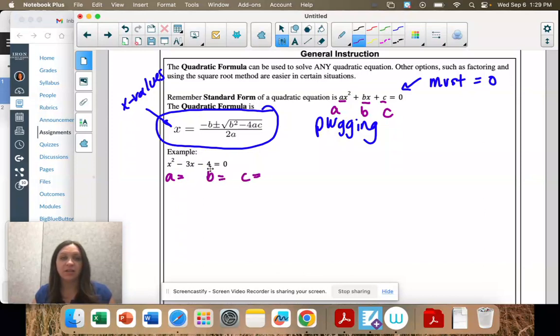So a is the number next to x squared. There's not a number next to x squared. There is. It's a 1. It's invisible. Remember when we factor, we like when that is 1. So a is 1, b is the number next to x, negative 3, and c is the constant negative 4. So remember the signs. If they're positive and negative numbers, that needs to come along with them.